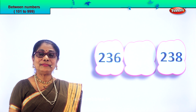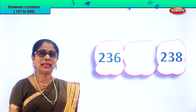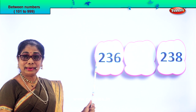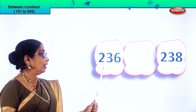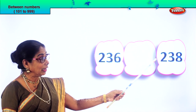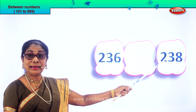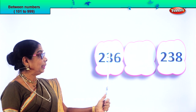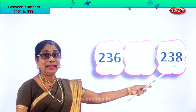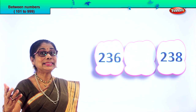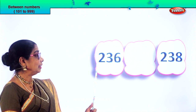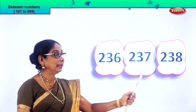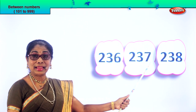Here we are. First let's read the numbers together. 236 and 238. So between 6 and 8, what will be the number? 7. Very easy to find. 236, 238, so 237.